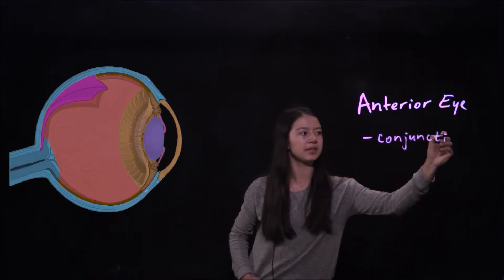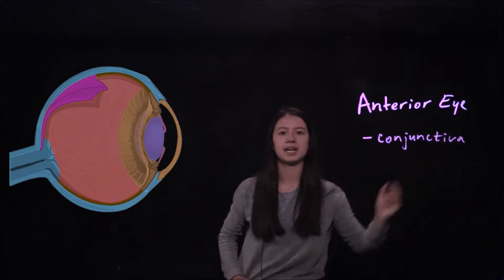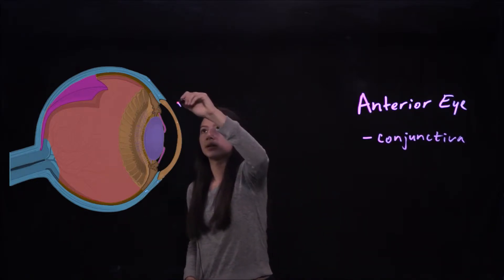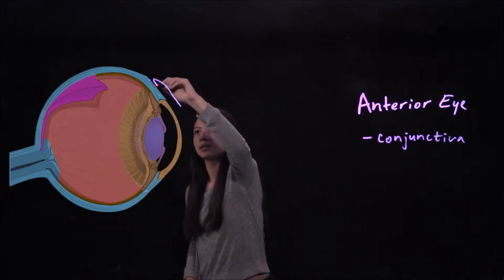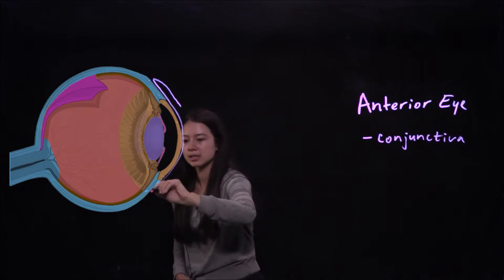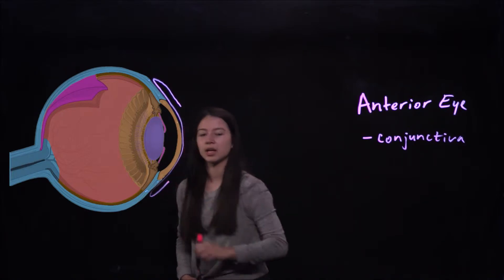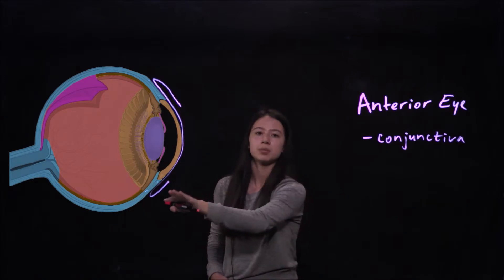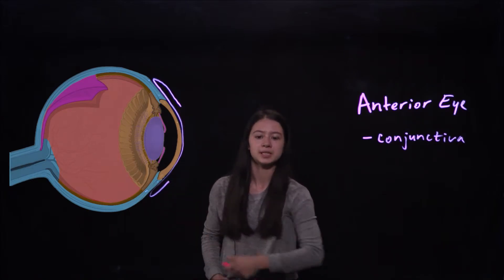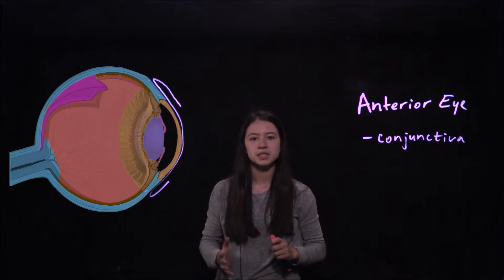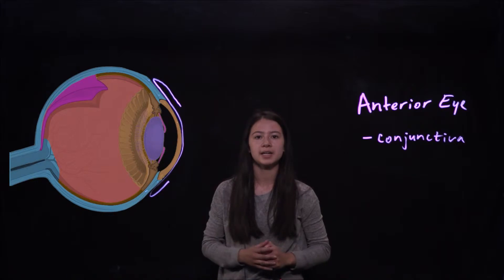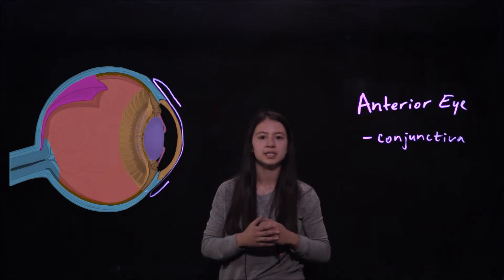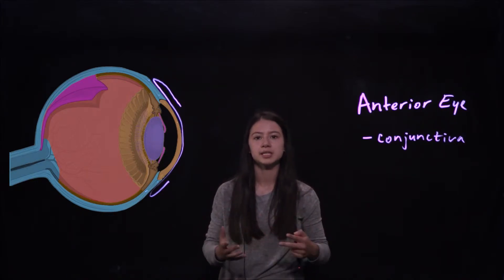The conjunctiva is a lining that goes around the front of the eye. It has two regions: the bulbar and the palpebral regions. Its function is to lubricate the eye so that it's easier to blink, and it also protects the eye from dust and debris.